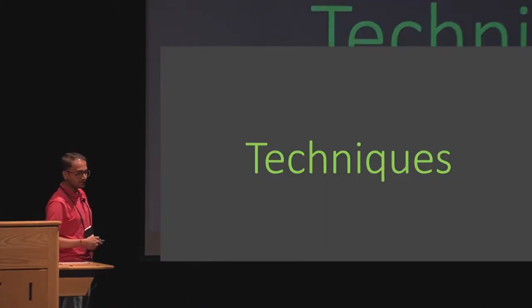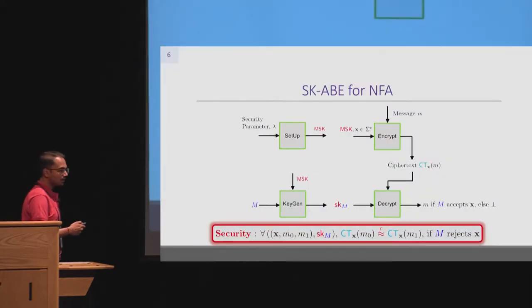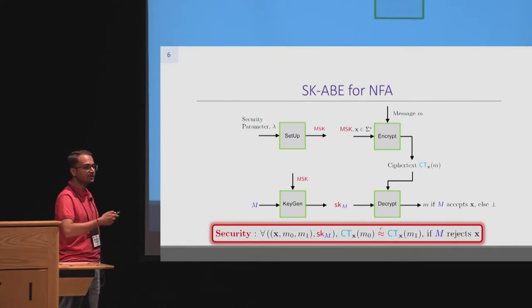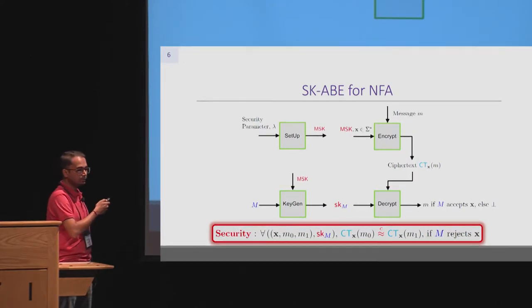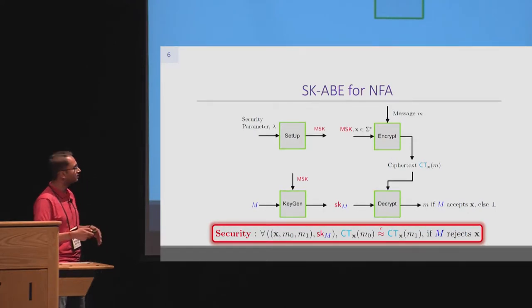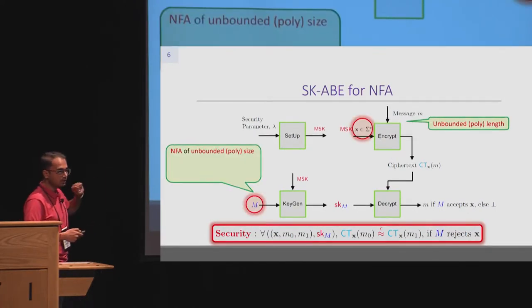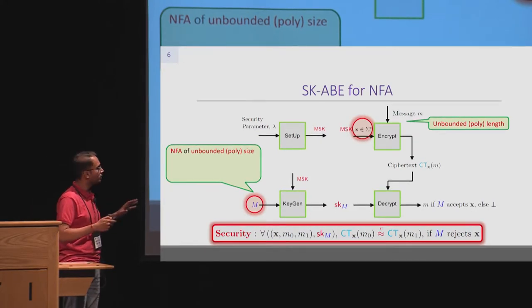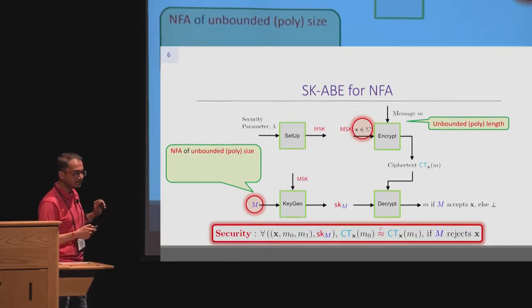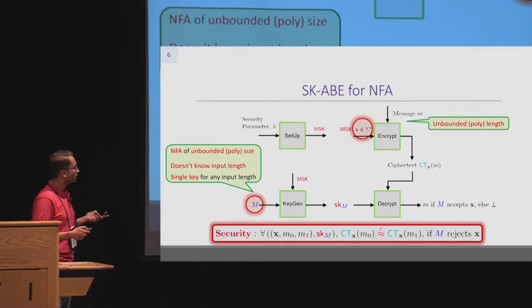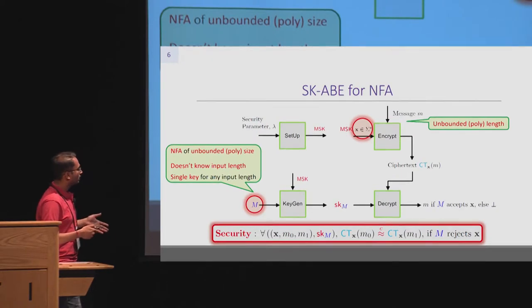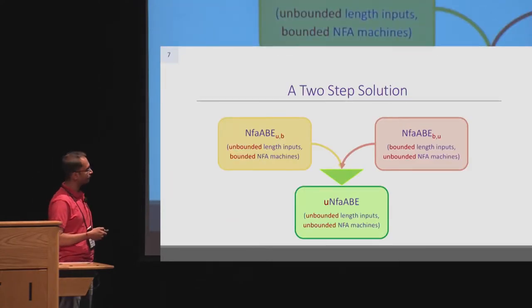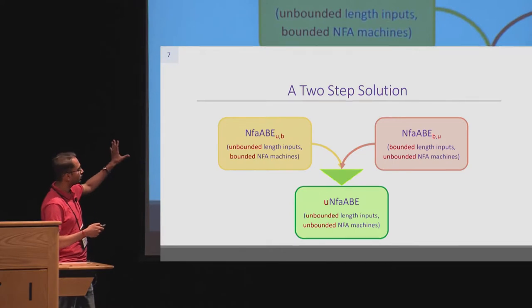Let's look at the techniques to construct this primitive. In secret key ABE for NFA, there is only a master secret key used for both key generation and encryption. The main differences are that the attribute will be of unbounded polynomial length, and the key generation takes the NFA description as input. More importantly, the key generator doesn't know the input length, yet must output a secret key that works with arbitrary input lengths. Security is modeled the same way as before.